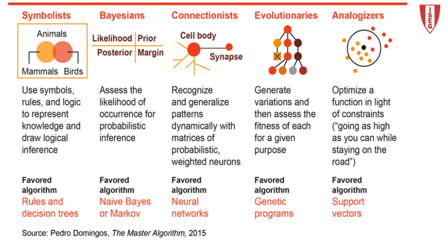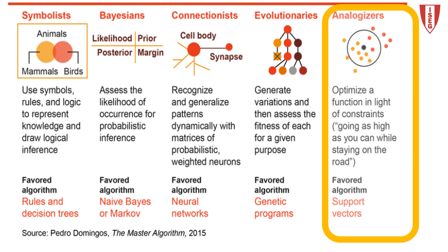Pedro Domingos, a professor from the University of Washington, suggests that in the context of machine learning there are five groups of researchers using five different approaches. Analogizers are interested in mapping new situations; they are influenced by psychology and use algorithms like KNN and SVM.